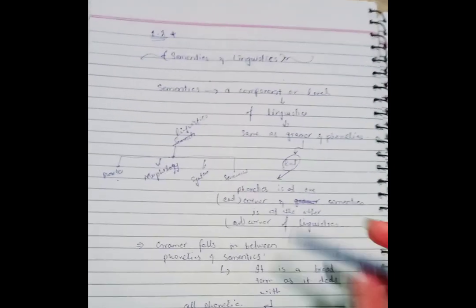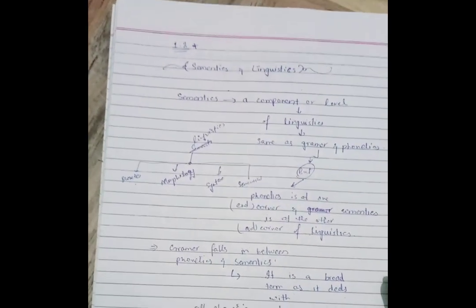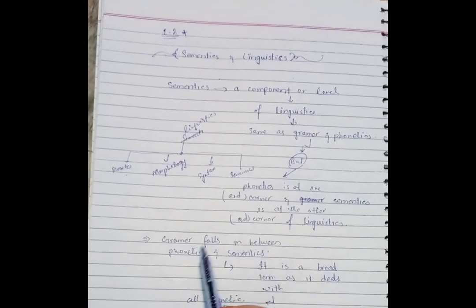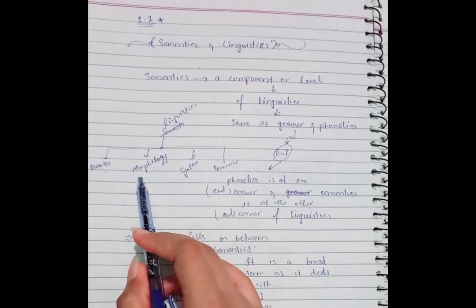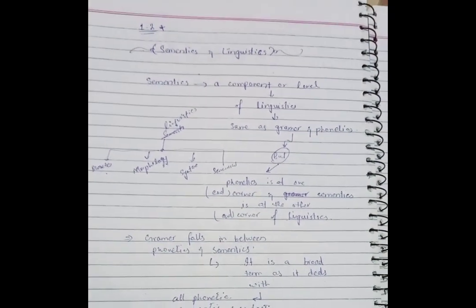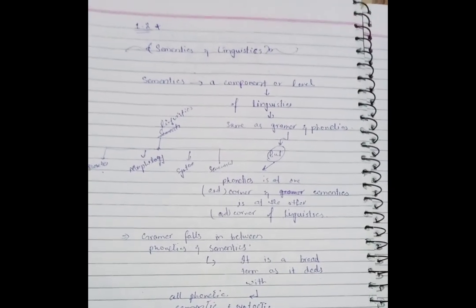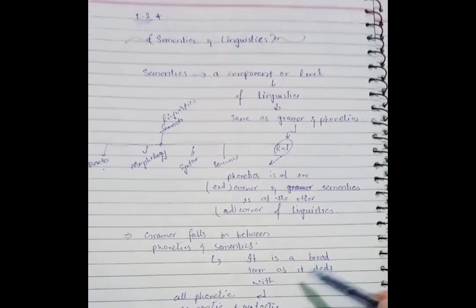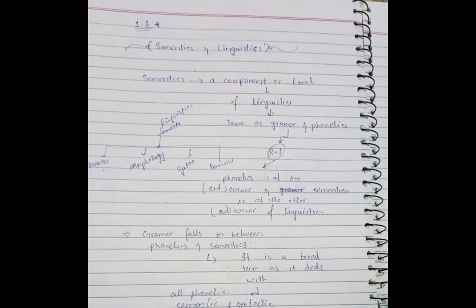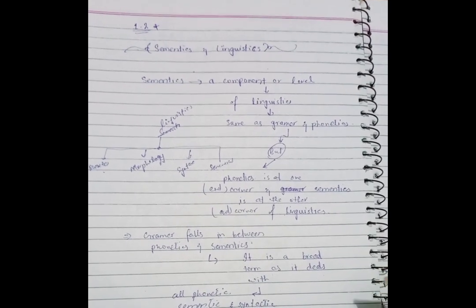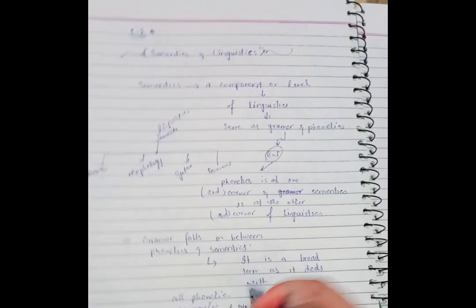Grammar falls in between phonetics and semantics. It deals with all aspects of language — all aspects of meaning — that is, which word is used in which way, which category is used in which way, which form of verb is used in which way. All that stuff is dealt with in grammar.